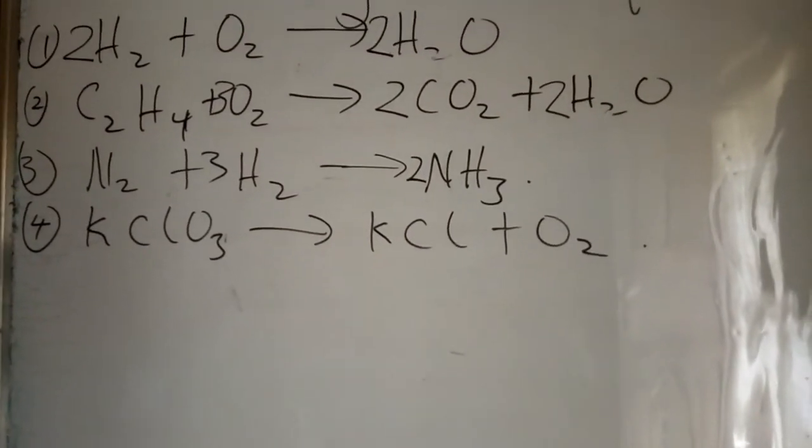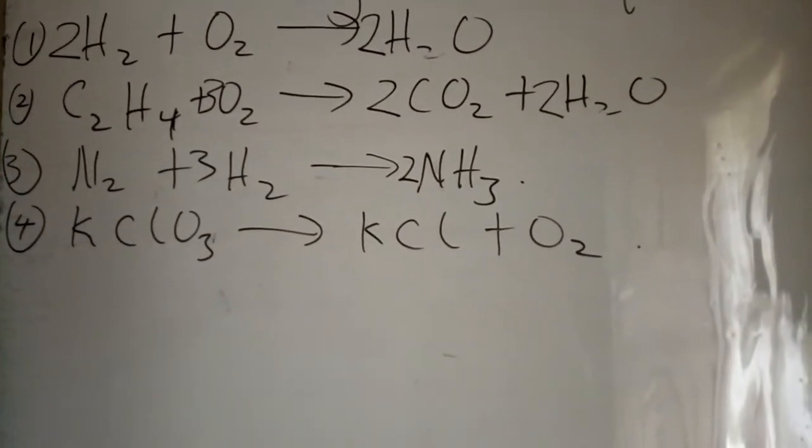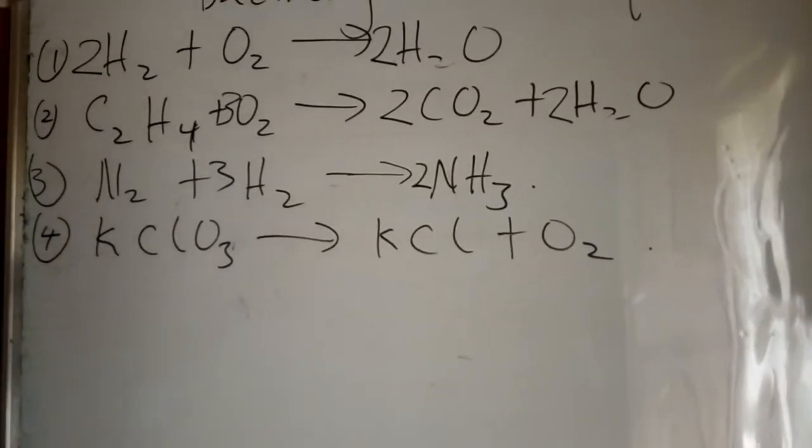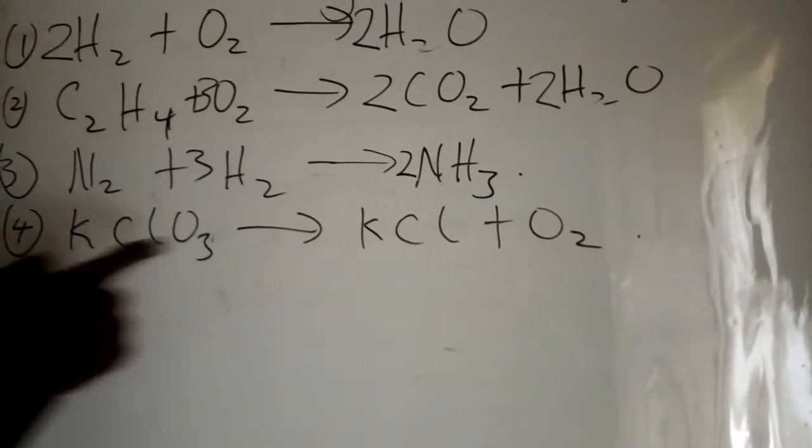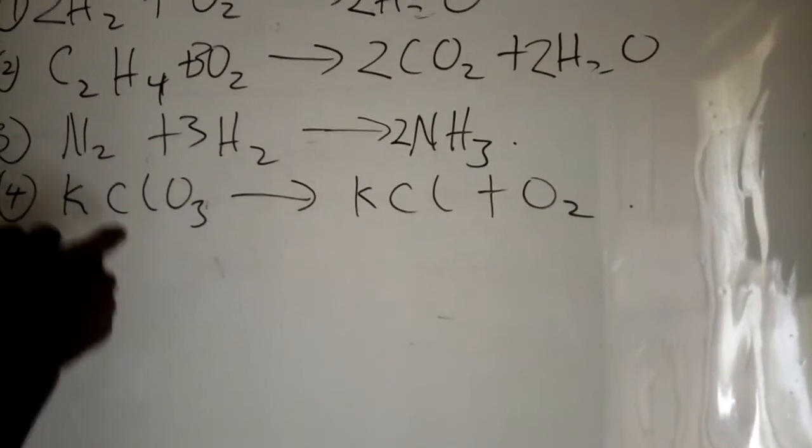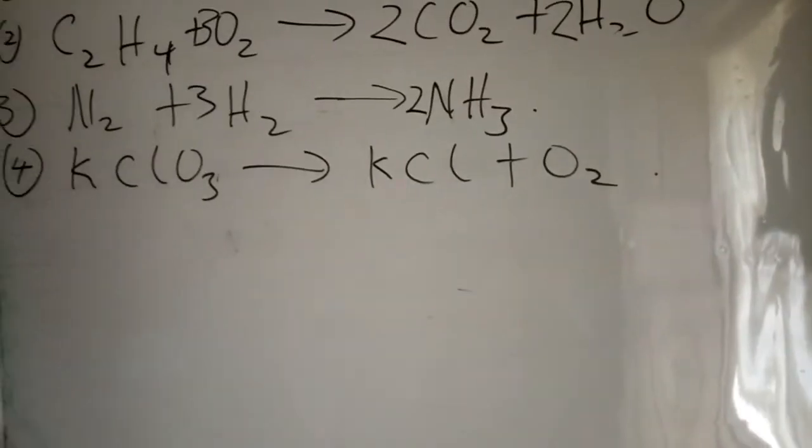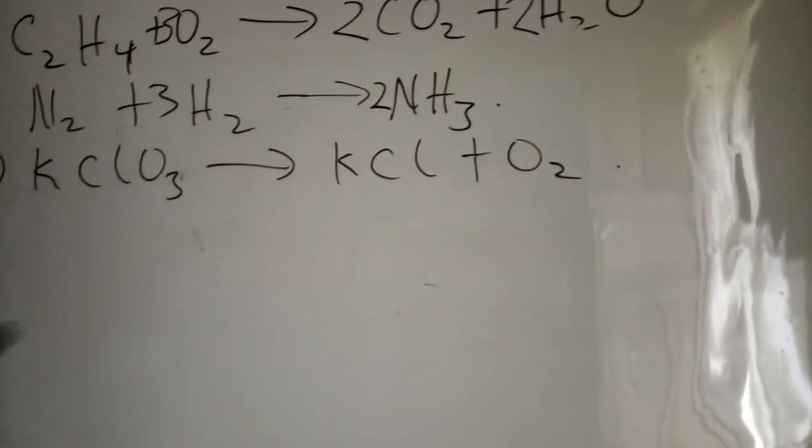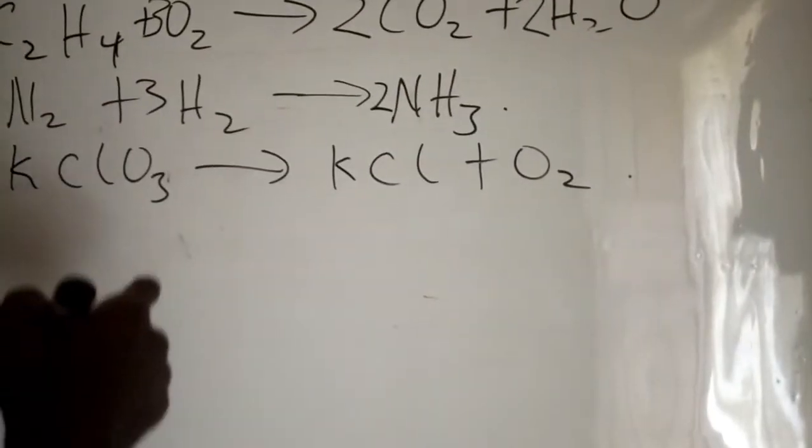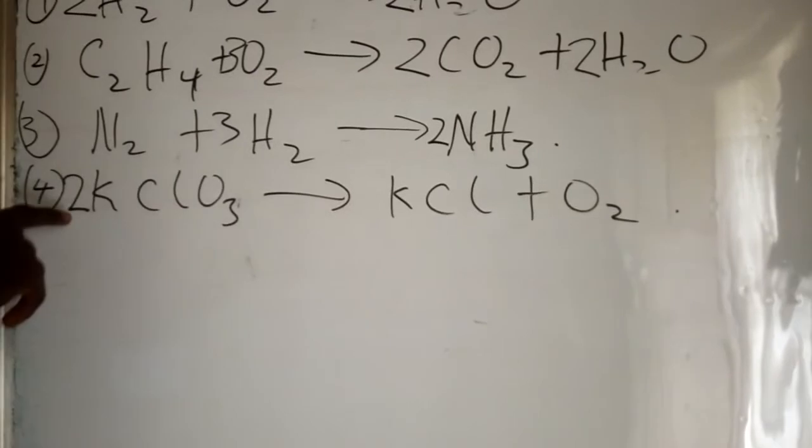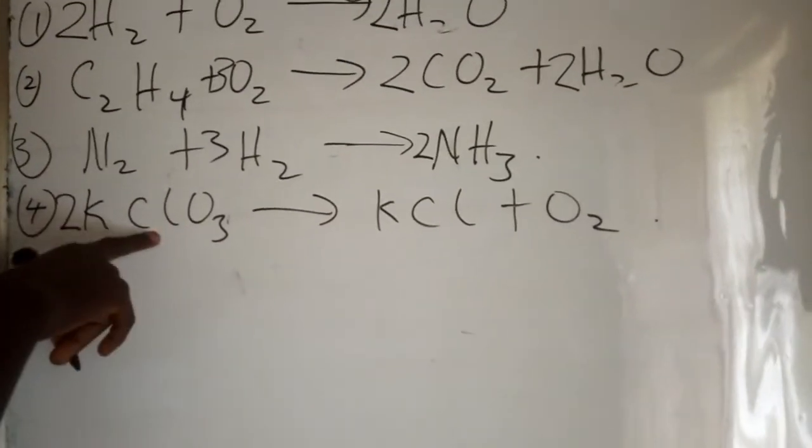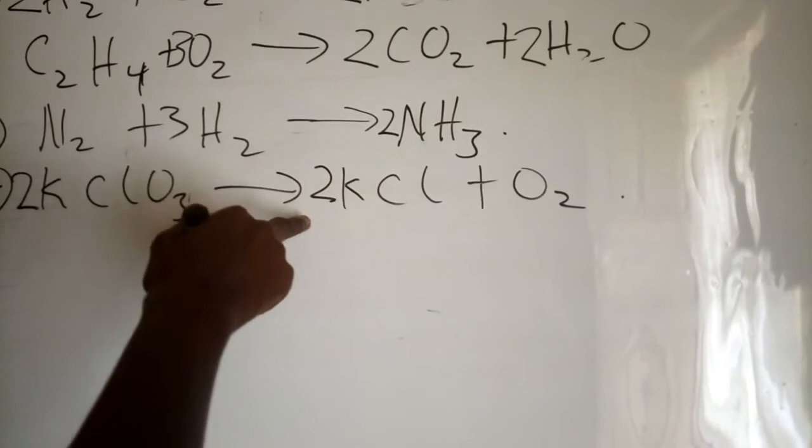This is the decomposition of potassium chlorate: KClO3 → KCl + O2. Potassium is balanced, chlorine is balanced. Oxygen is three here and two there. Here's three and here's two. Let's interchange the numbers. We put 2 before KClO3. We now have two molecules of potassium and two molecules of chlorine, so we also put 2 before KCl to balance.